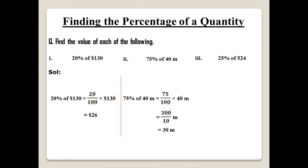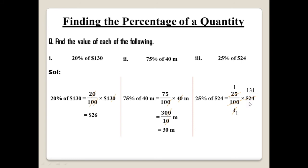The third one: 25 over 100 multiplied by 524. Here 100 can be cancelled with 524's factor easily — cancel it, then multiply 25 by the remaining value. Breaking it down: 25 ones are 25, 25 fours are 100, then working through the multiplication gives 4 times 131. The answer is 131.